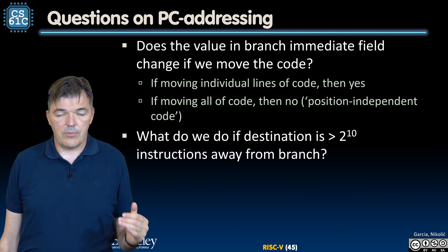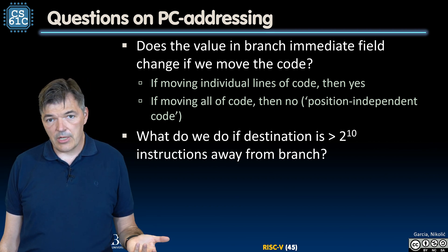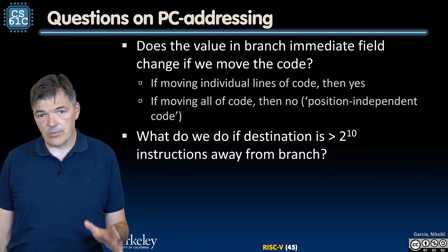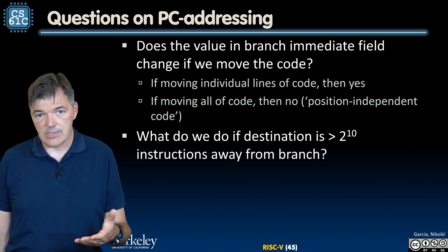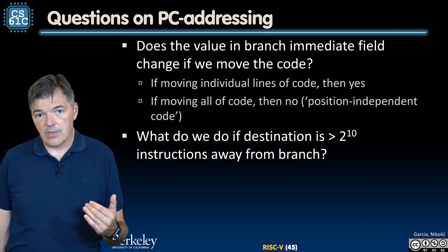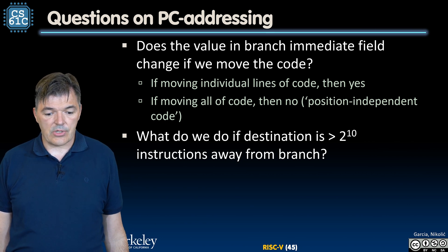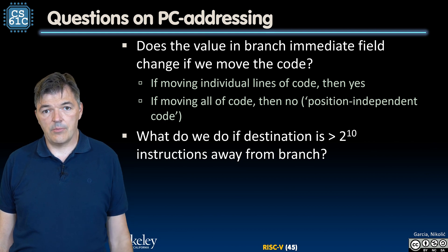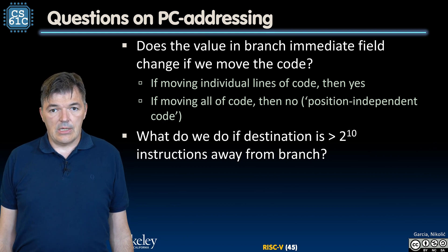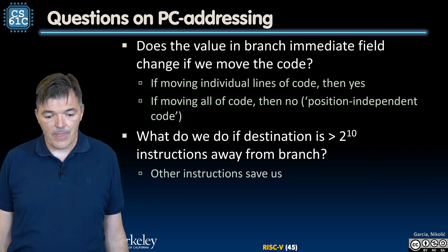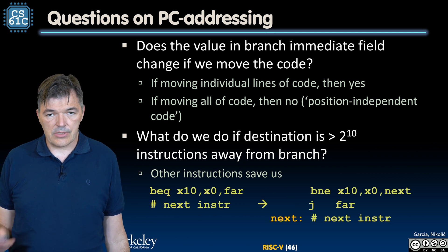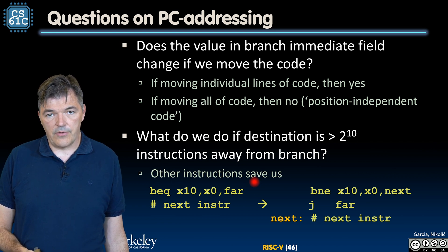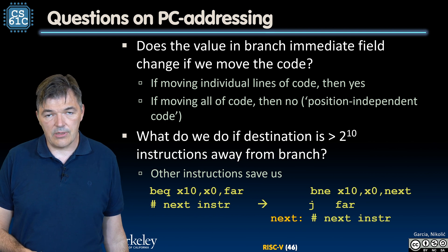There is another important thing to keep in mind: the range of our branches is limited, since we are limited to 13-bit offsets. We drop the last bit and keep 12 bits in our instruction encoding, so the range is limited to plus or minus 1024 instructions away from the branch instruction. What happens if we need to branch further? Rarely, but it may happen that we have to branch to a location outside that range. We can't do that with a single branch instruction. Here is an example: a branch-if-equal on x10 and x0 to a far-away location outside the ±1024 range.